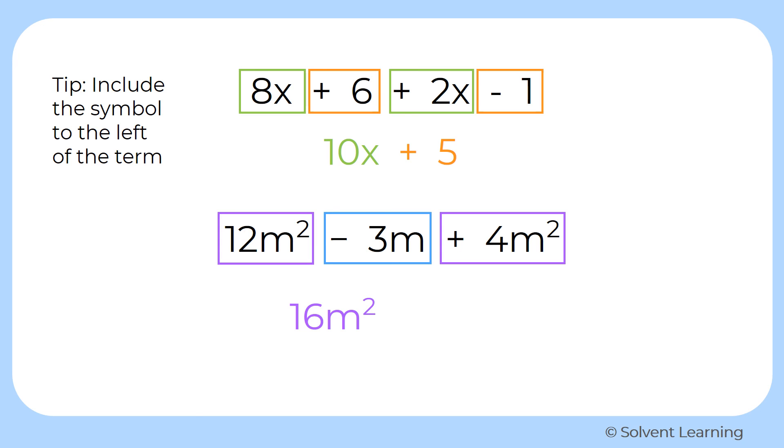And then that minus 3m in the middle, there is nothing else to combine it with. So I just keep it as it is. And my final simplified expression is 16m squared minus 3m.